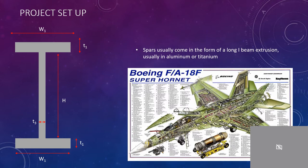I-beams usually come in the parameters looking like this, with a cross-section obviously looking like an I. And below is shown kind of an example of how they're used throughout aircraft.